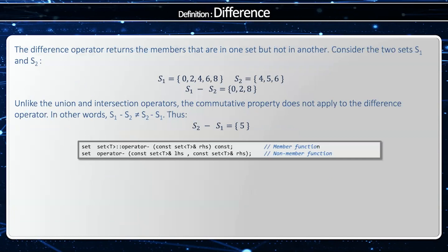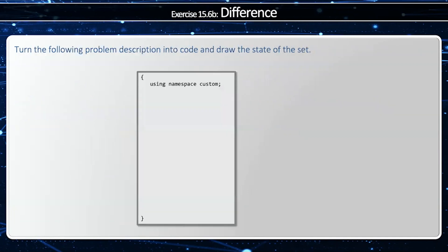Okay, to find the difference, I'm going to take all from the left-hand side and subtract those from the right-hand side. And we represent that with a minus operator in C++. Notice this is not commutative. In other words, S1 minus S2 is not the same as S2 minus S1.